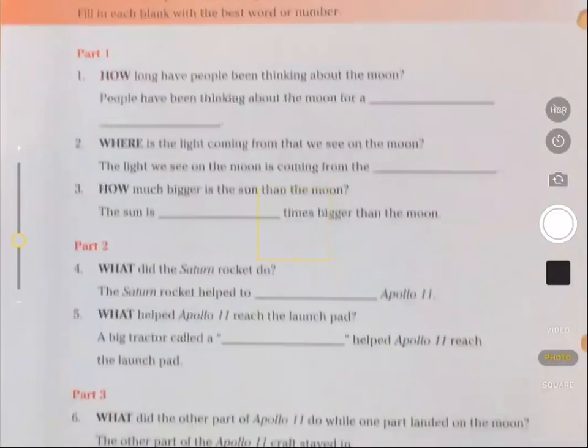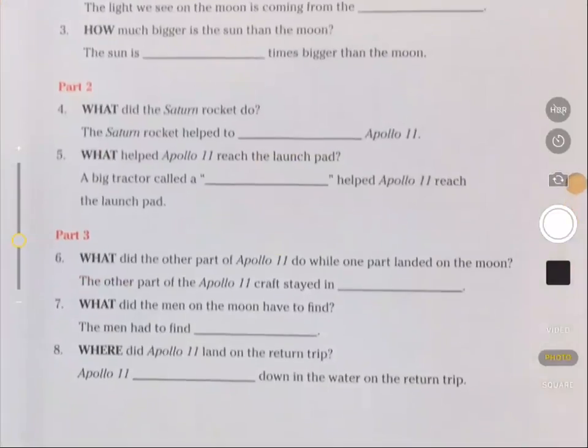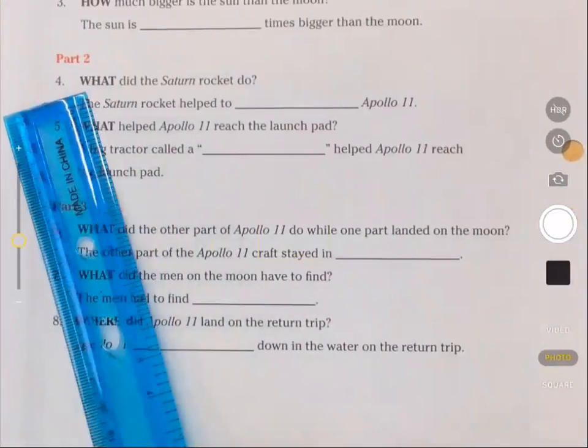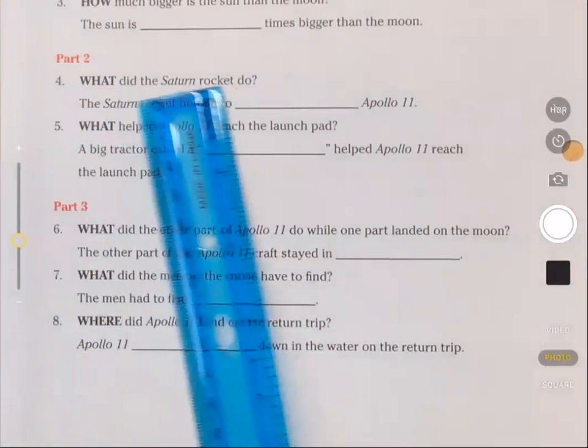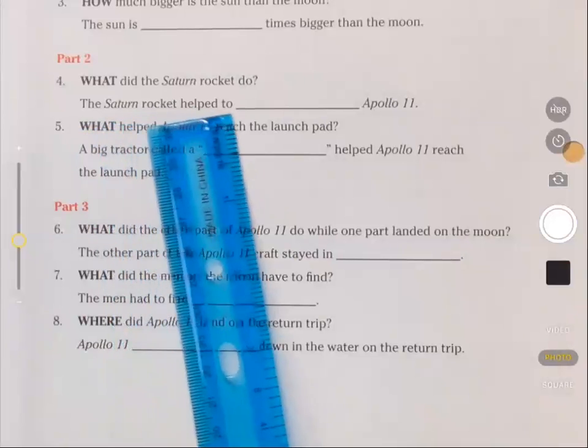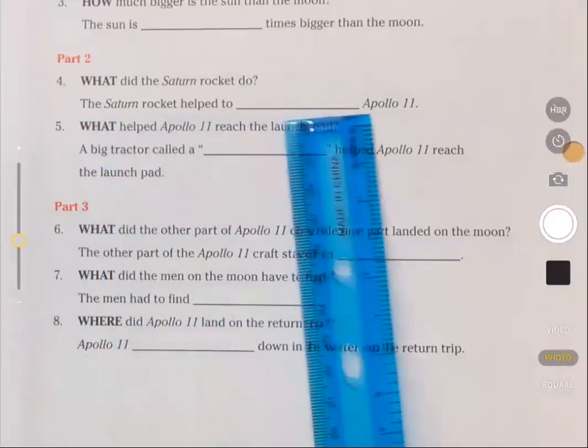Okay. Questions four and five relate to part two of the story. Question four: What did the Saturn rocket do? The Saturn rocket helped to blank Apollo 11.